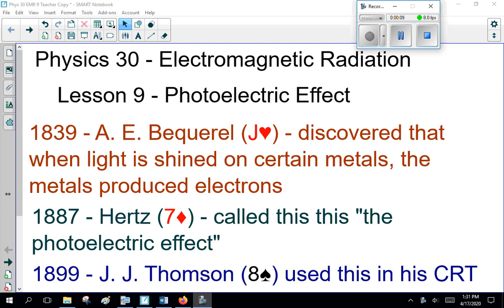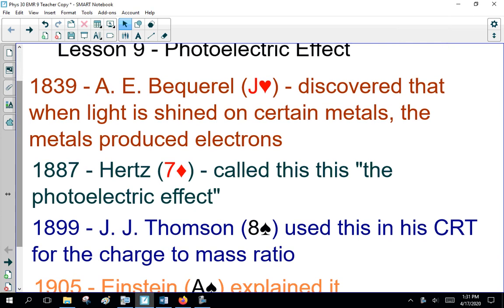1839, A. E. Becquerel, Jack of Hearts, discovered that when light is shined on certain metals, the metals produce electrons. 1887, Hertz, seven of spades, called this the photoelectric effect.